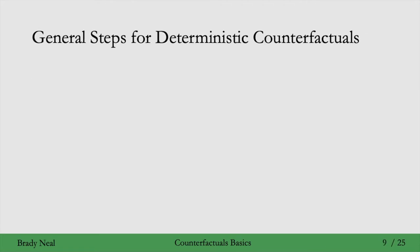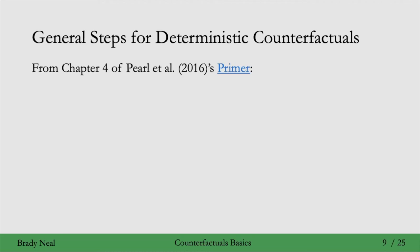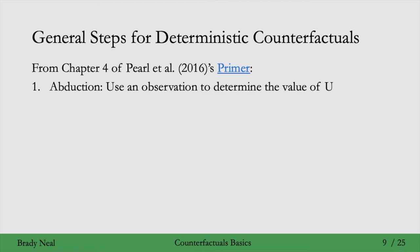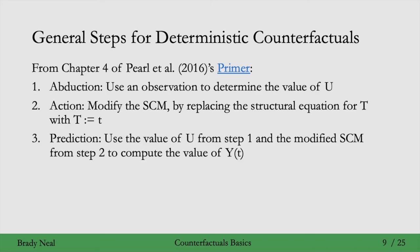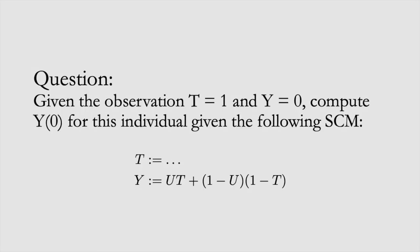What we did was a specific example, but there are general steps for this, taken from Chapter 4 of Pearl's Primer. Step 1 is abduction: use an observation for an individual to determine their value of u and get their individualized SCM. Step 2 is action: modify that SCM by replacing the structural equation for t with the specific little t we're interested in. Step 3 is prediction: use the value of u from step 1 and the modified SCM from step 2 to compute the value of the counterfactual. Question: given the observation t equals 1 and y equals 0, compute the counterfactual y0 for this individual given the following SCM.